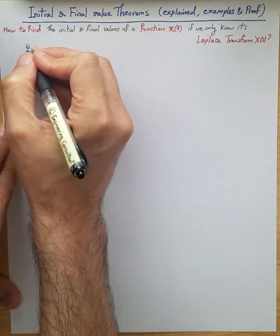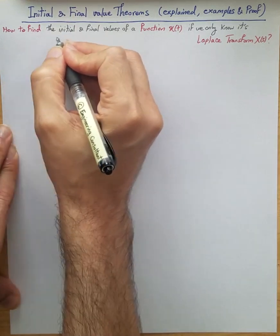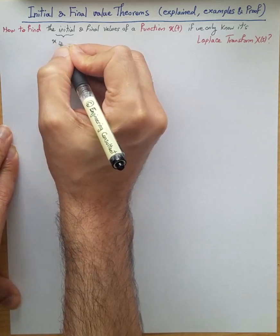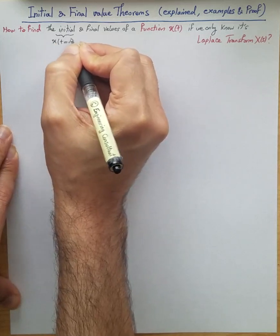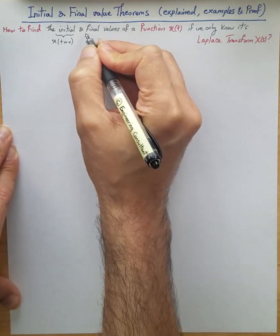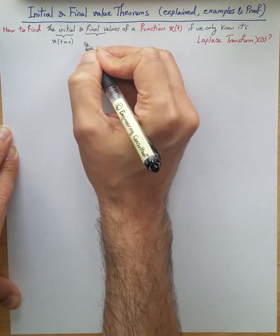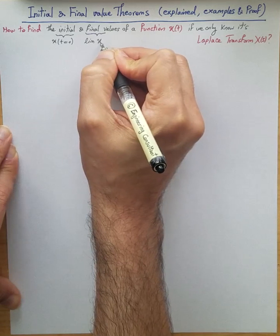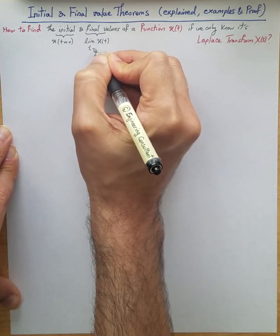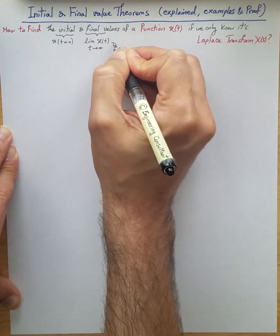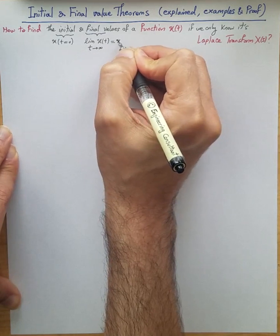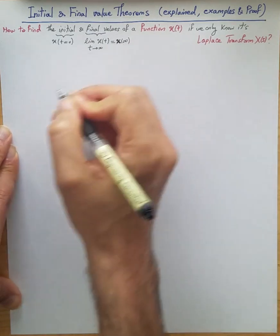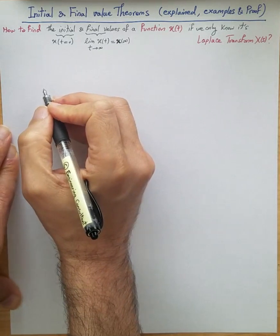What is the initial value? By initial value, we are referring to the value of the function at time zero. And for final value, we are talking about the value of that function when time approaches infinity, referred to as x of infinity — that is the limit of the value.